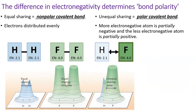But when two elements with largely different electronegativities form a covalent bond, the more electronegative atom will pull the electron density closer to its nucleus. With more electron density around that atom, it gains a partial negative charge, while the other atom gets a partial positive charge. This is called a polar covalent bond.